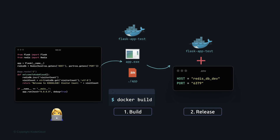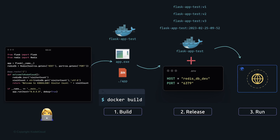Every release should have a unique release ID — a version like V1, V2, V3, or a timestamp so it's easy to recognize when it was created. Any minor change in code should create a new release. The run phase executes the release object in its respective environment — the same build is used across all environments, ensuring consistent code running in a consistent fashion. Any code change triggers a new build, a new release, and a new deployment.